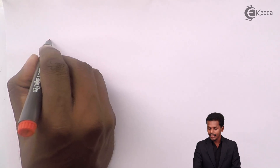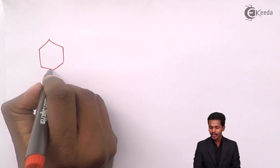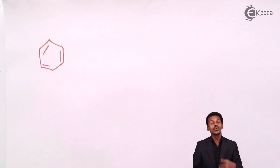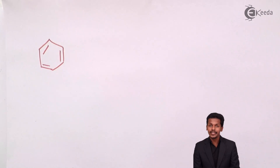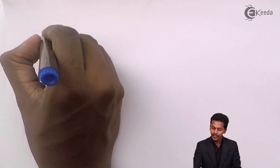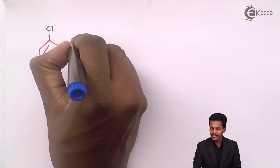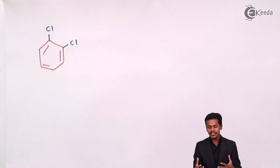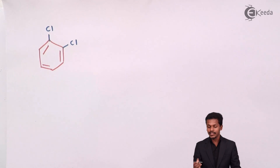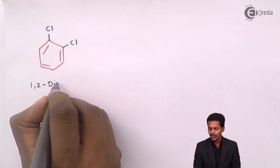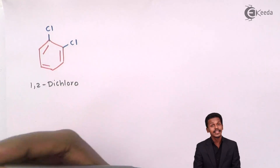Suppose we have benzene as the main hydrocarbon and we have to replace two hydrogen atoms with two halogen atoms. Suppose one hydrogen here and one hydrogen here undergo substitution, replaced by chlorine atoms. So the two hydrogen atoms have been replaced by two chlorine atoms, and the IUPAC name of this compound would be 1,2-dichlorobenzene.